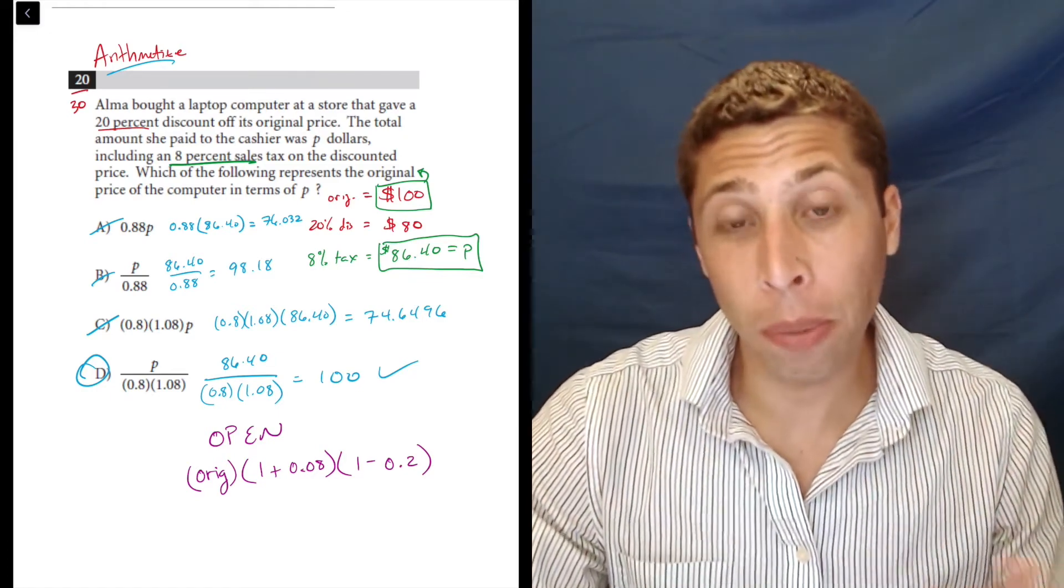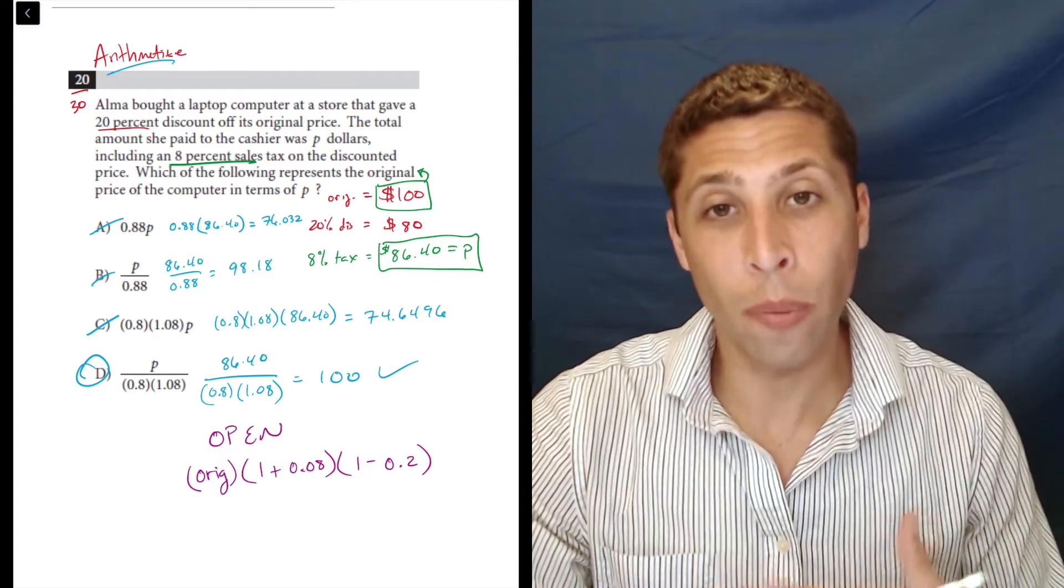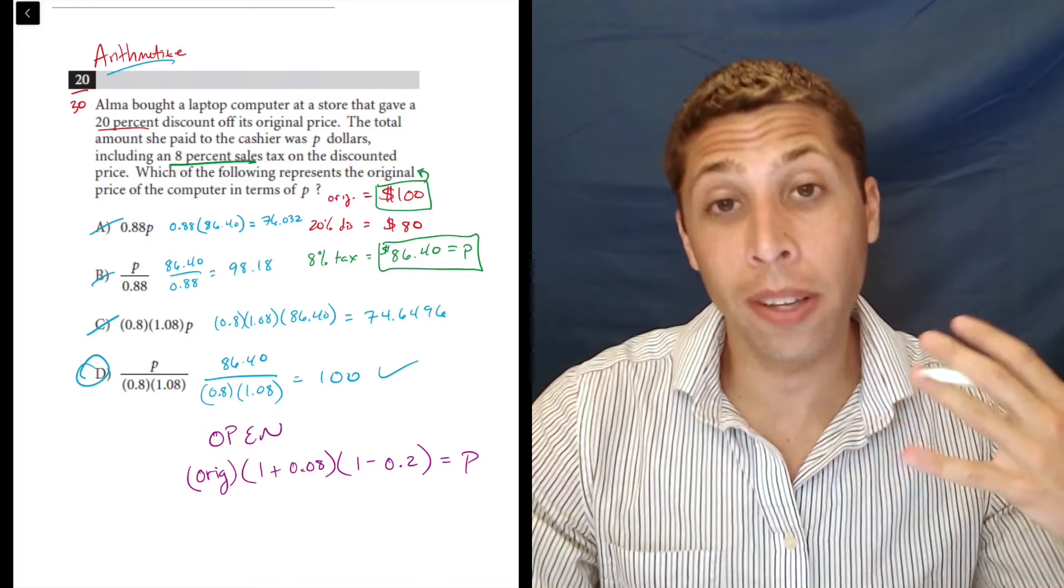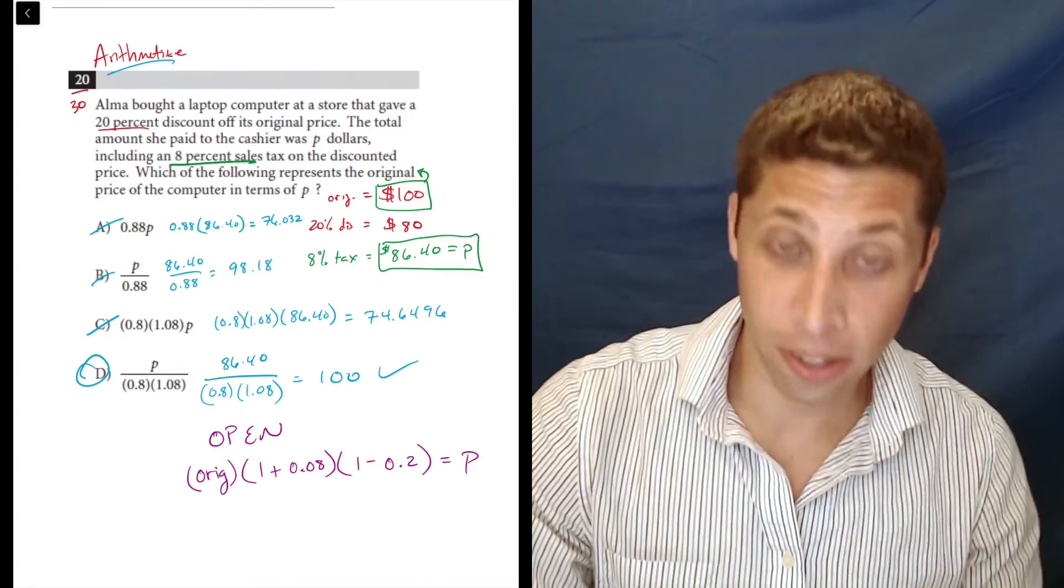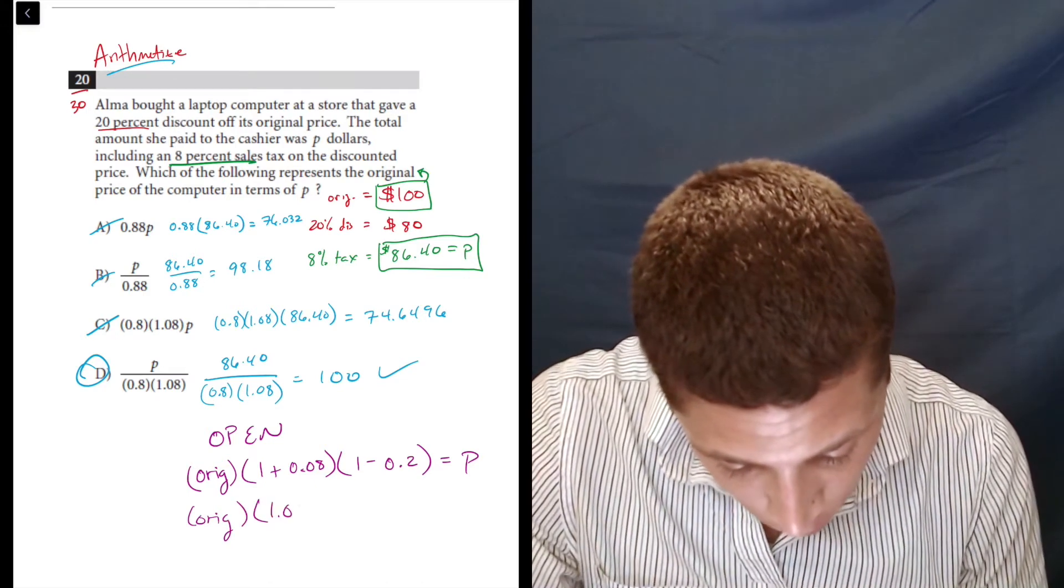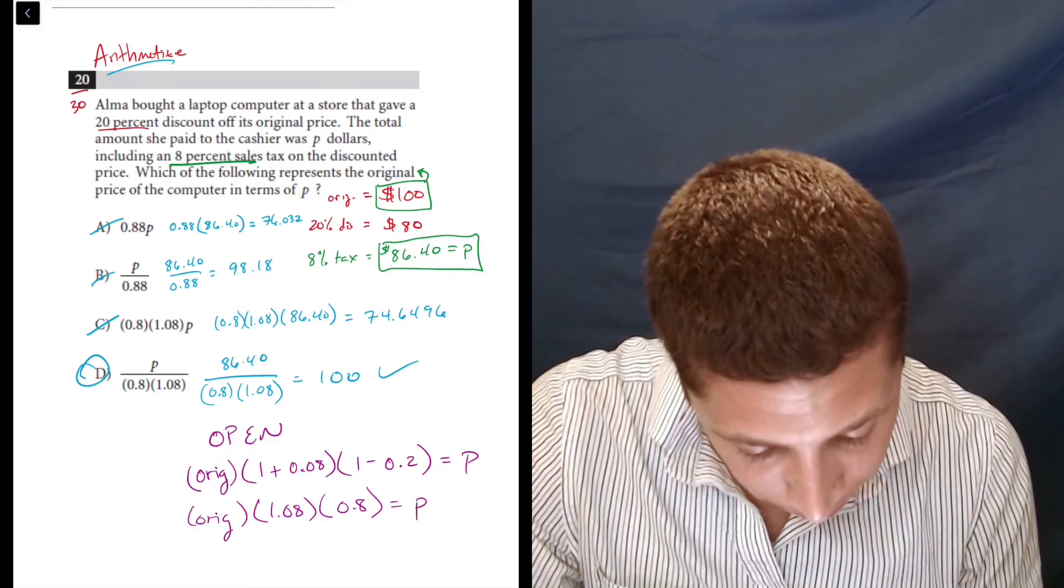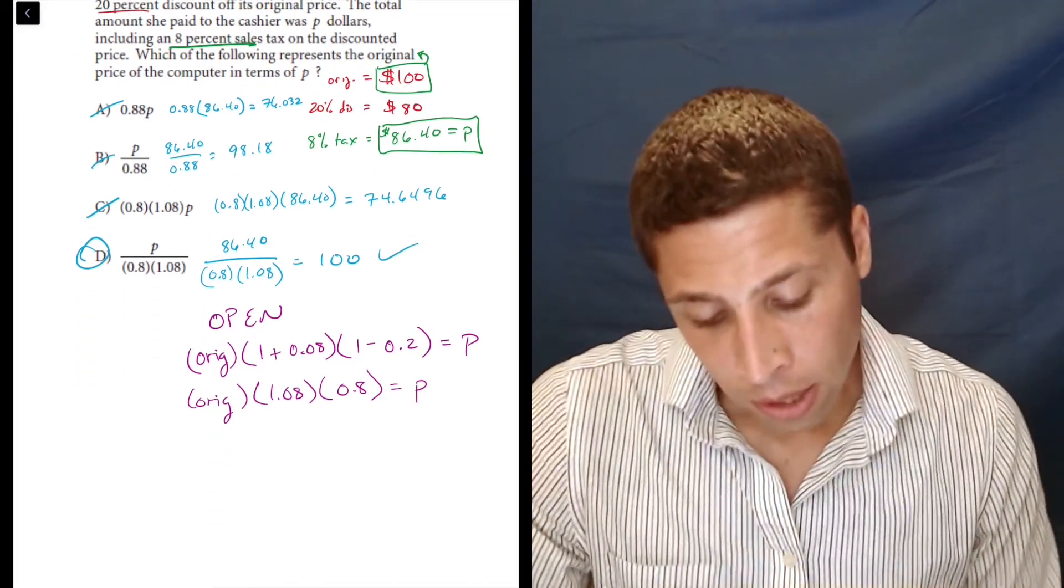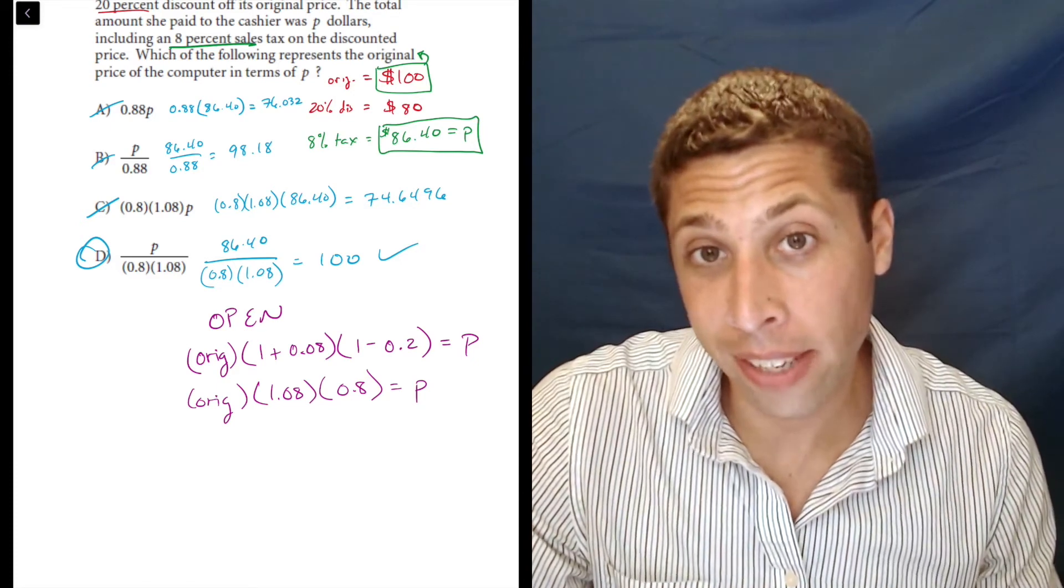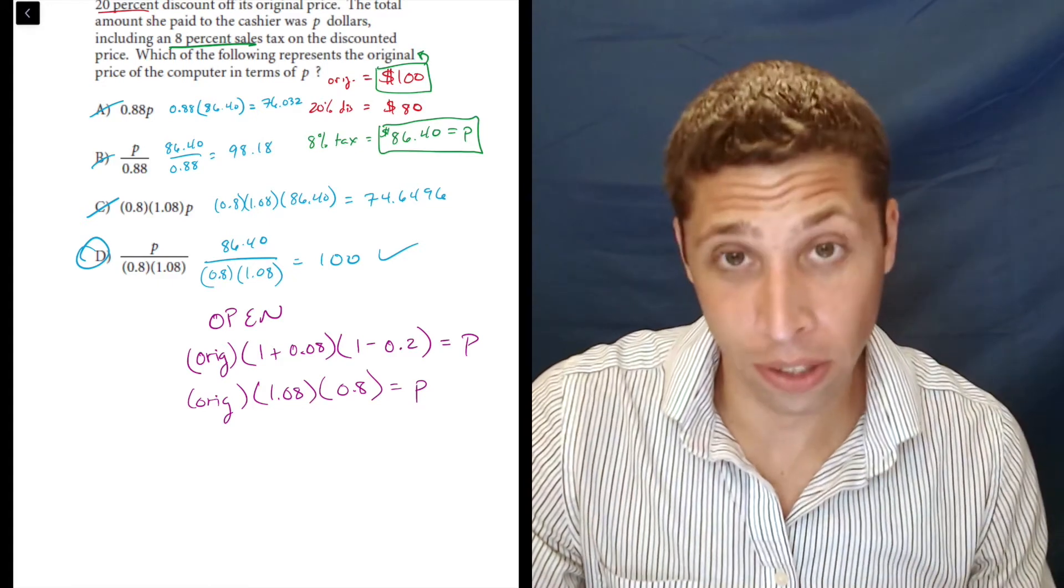And this is why we do plus or minus and why that's kind of factored into the formula is when we simplify that, it's going to look different than it does in the story. So that's equal to P, the amount she paid, and you'll see what I mean right here, 1.08 times 0.8, right? So 20% discount looks very different in decimal terms. And so the open formula is designed to account for all this stuff.